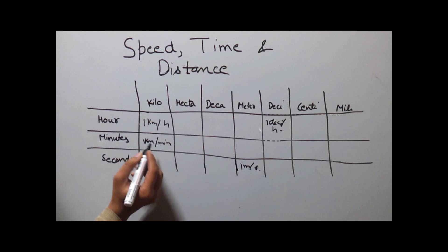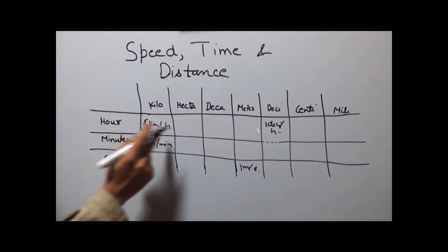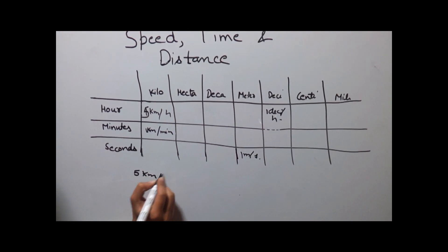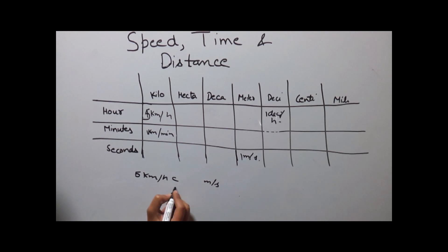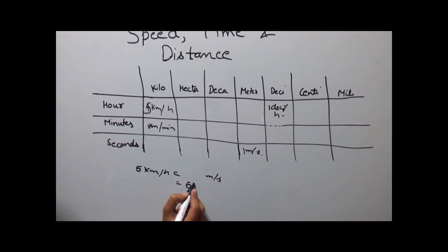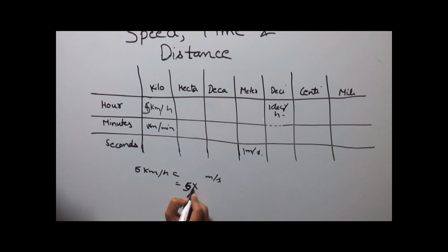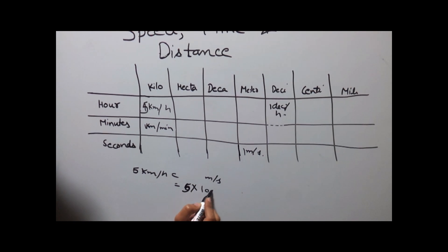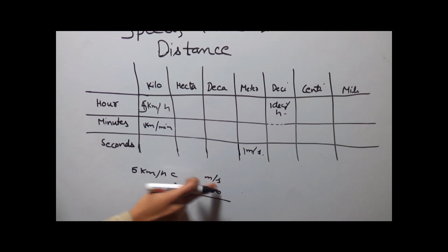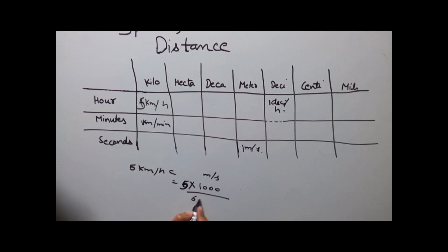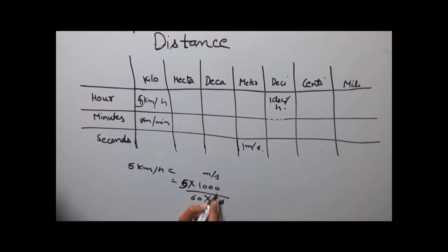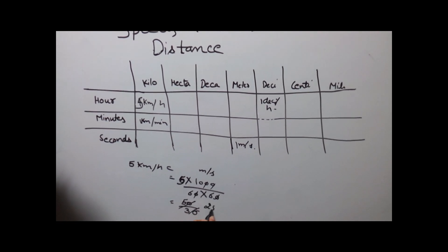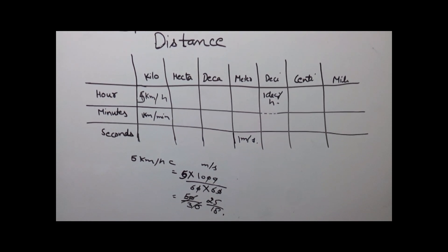Let's check with one more example. Suppose we need to convert 5 kilometers per hour to meters per second. Put 5 multiplied by how many meters in 1 kilometer — that is 1000 meters — divided by how many seconds in 1 hour — 60 into 60. This gives us 5000 by 3600, which simplifies to 25 by 18 meters per second.